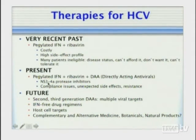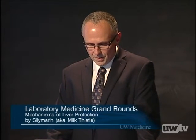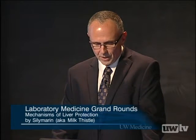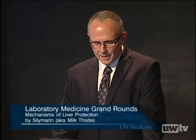The current therapy is pegylated interferon and ribavirin plus directly acting antivirals (DAAs), the first generation being NS3-4A protease inhibitors. There will likely be compliance issues and resistance problems with these DAA compounds as the virus can evolve away from drug pressure. The future will likely see second and third generation DAAs targeting multiple viral proteins and enzymes, with efforts to move away from interferon and toward host cell targets. Some of the work with Silymarin argues that it is targeting the cell.